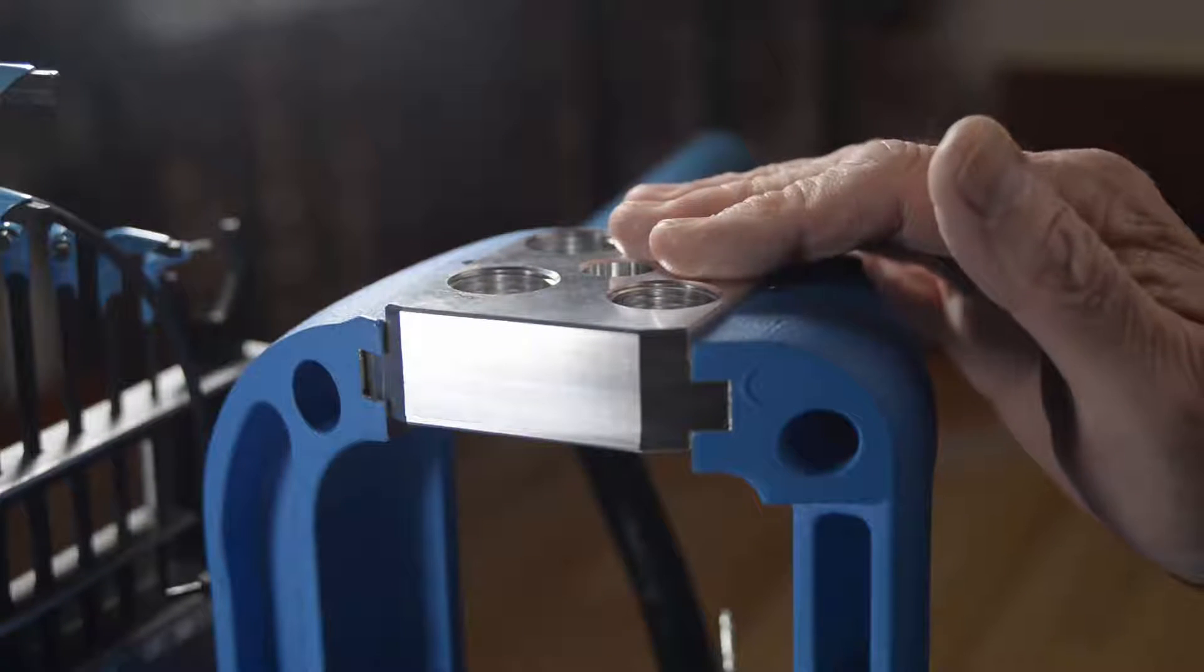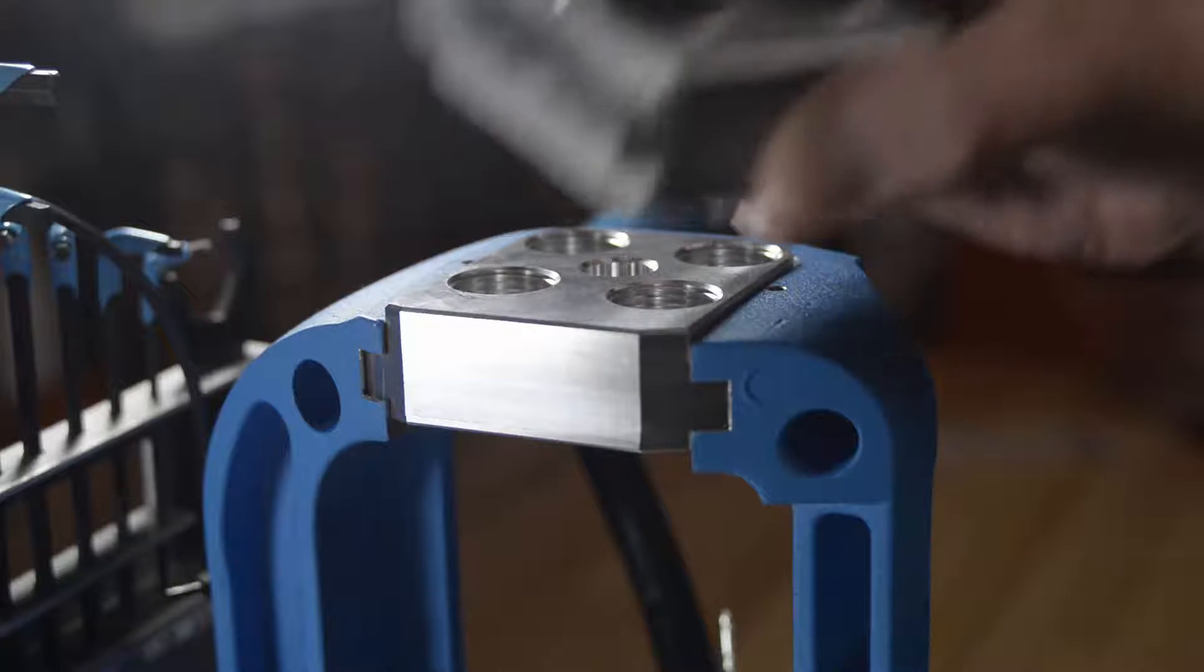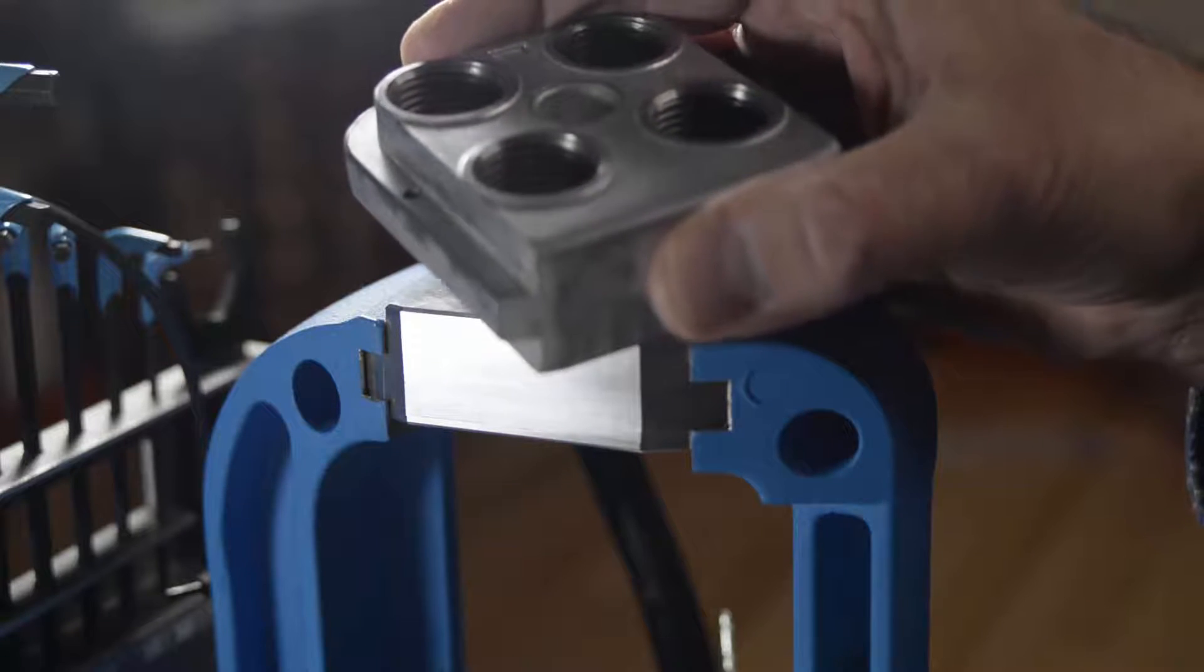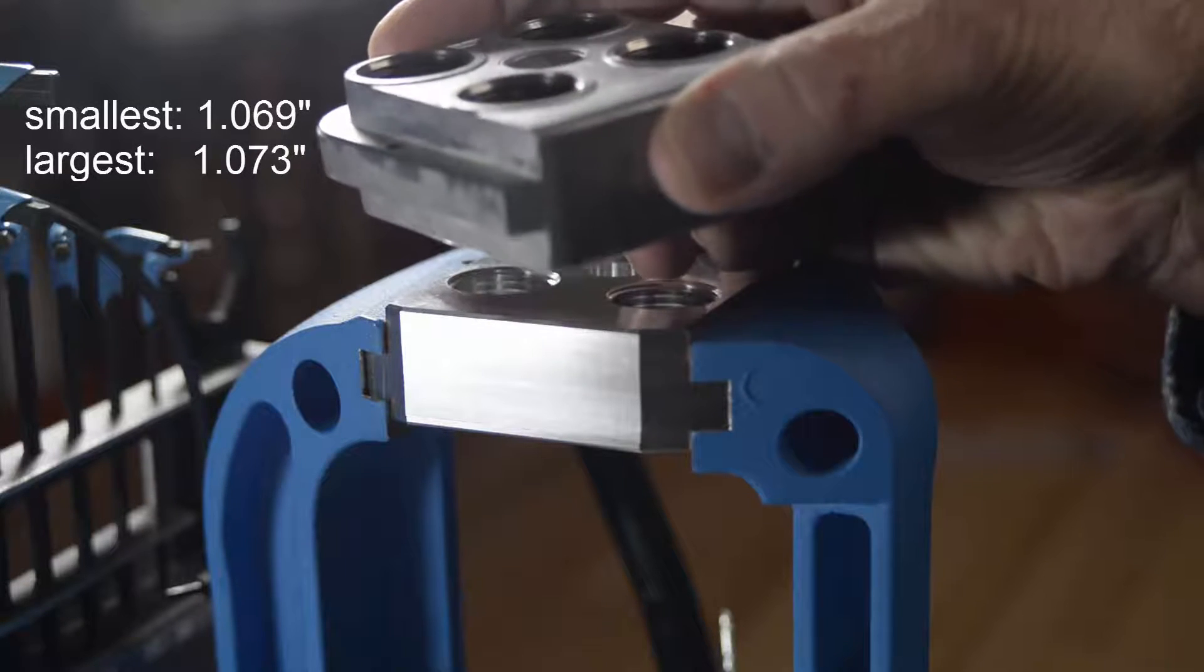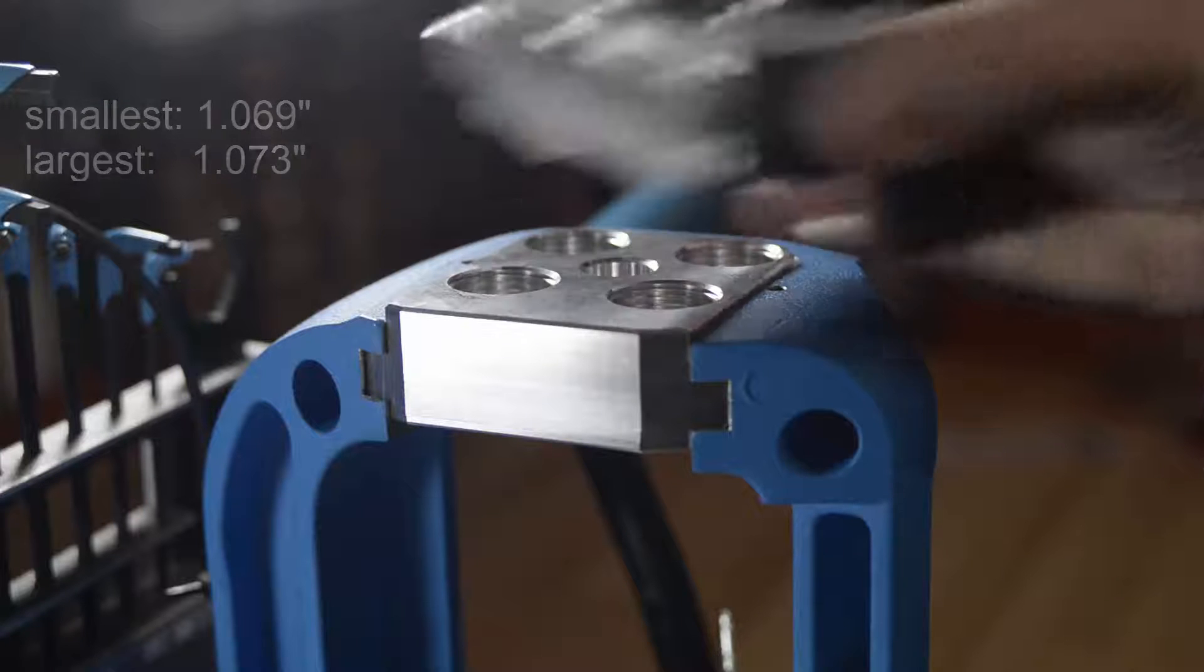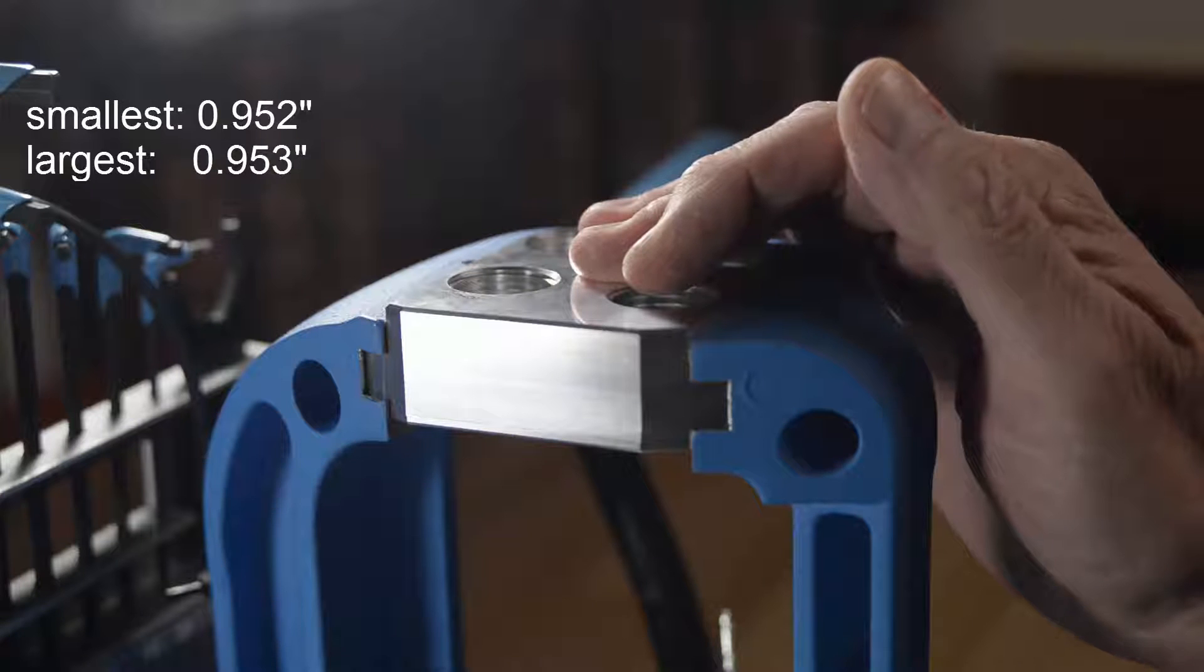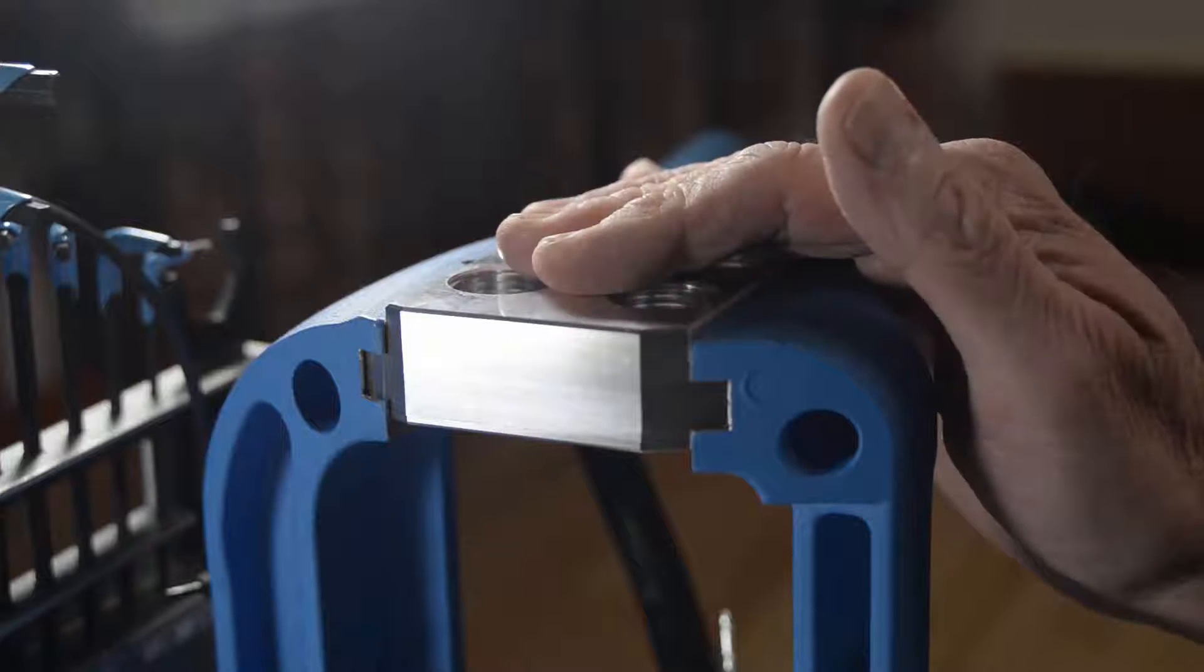The CNC tool head is 0.953 inches thick, and the Dillon is 1.070 inches thick. I took four thickness measurements of each tool head, and the Dillon varied more in thickness. The smallest measurement was 1.069 inches, and the largest was 1.073 inches. The smallest measurement for the CNC was 0.952 inches, and the largest was 0.953 inches. So while the tool head is slightly thinner, it is more consistent.